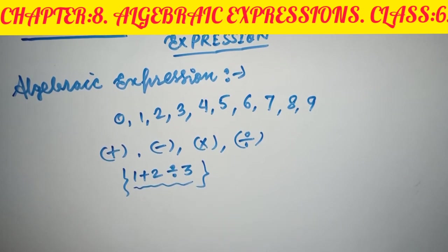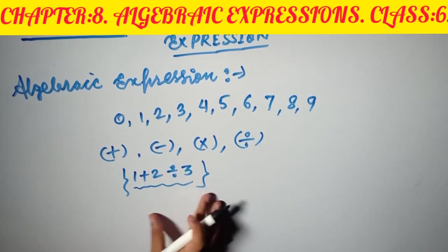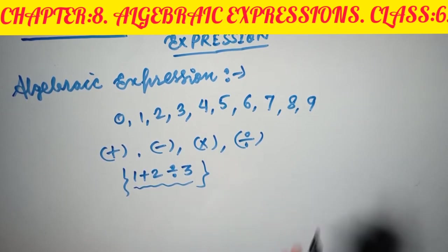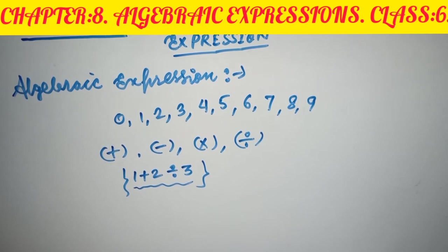When a number or digit is combined with any one of the four operations, that is called an expression. When all this comes in algebra, it is called an algebraic expression. The digits 0 through 9 are symbols that tell us the numbers or values.